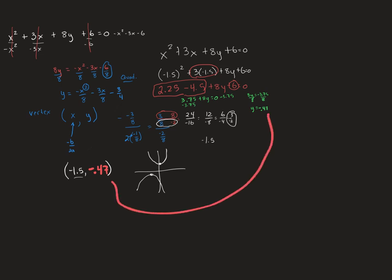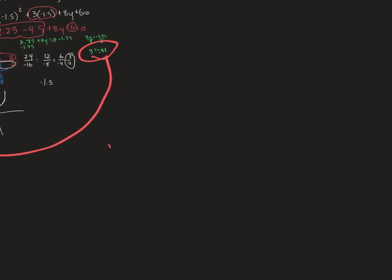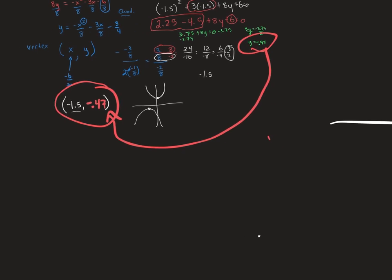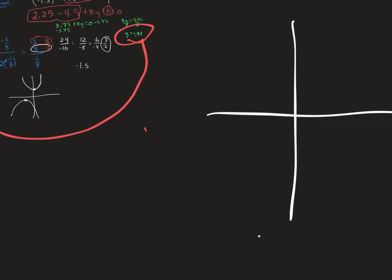Don't let decimals bother you — the fact that this is ugly doesn't matter. Here's your vertex. So on the coordinate plane, the vertex is at negative 1.5 and negative 0.47. Going left to negative 1.5, and then down not quite 1 — so about right there. That's my vertex. But now I don't know if the graph goes downward or upward from there.